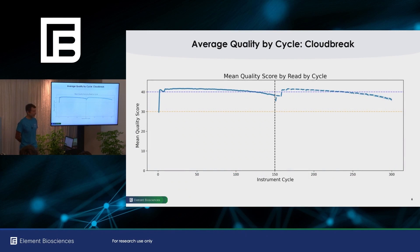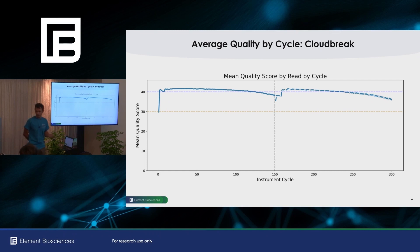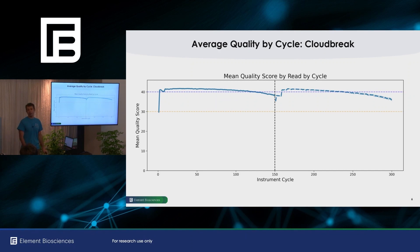If you want to see quality by cycle, here is a 2x150 aggregated across about 20 sequencing runs. You can see that most cycles stay above Q40 on average, with a little bit of tailing off at the very end of read two. This is one of the results of the avidite and the individual optimization of each step — these very high Q scores.